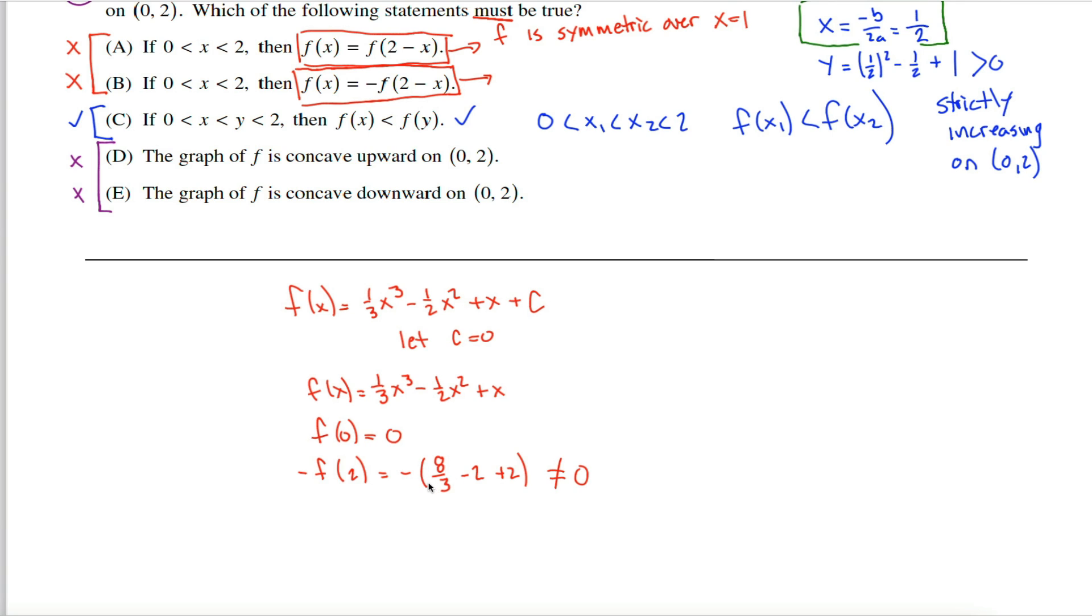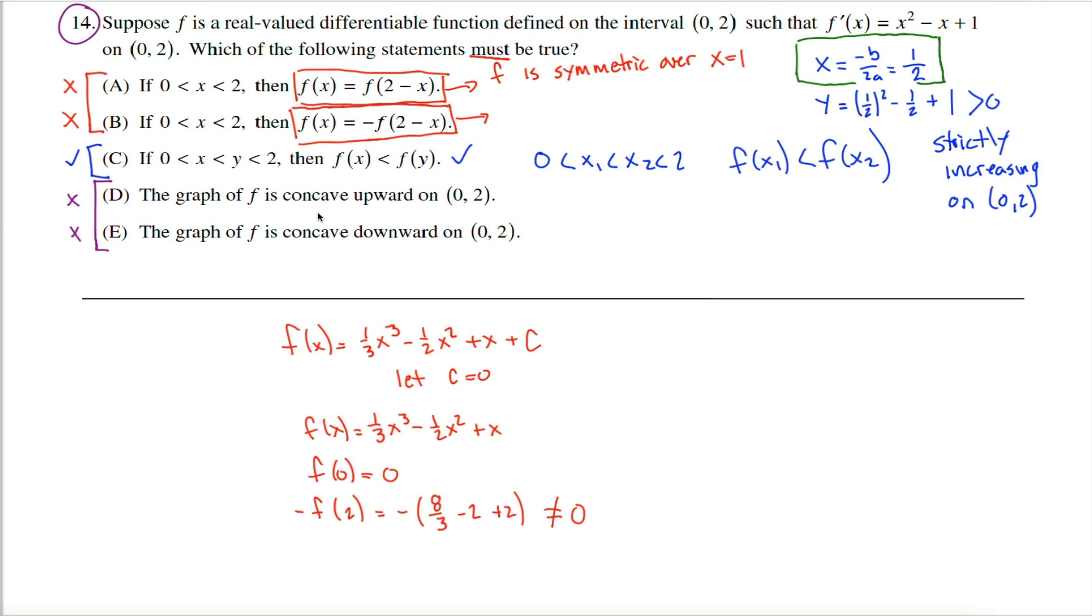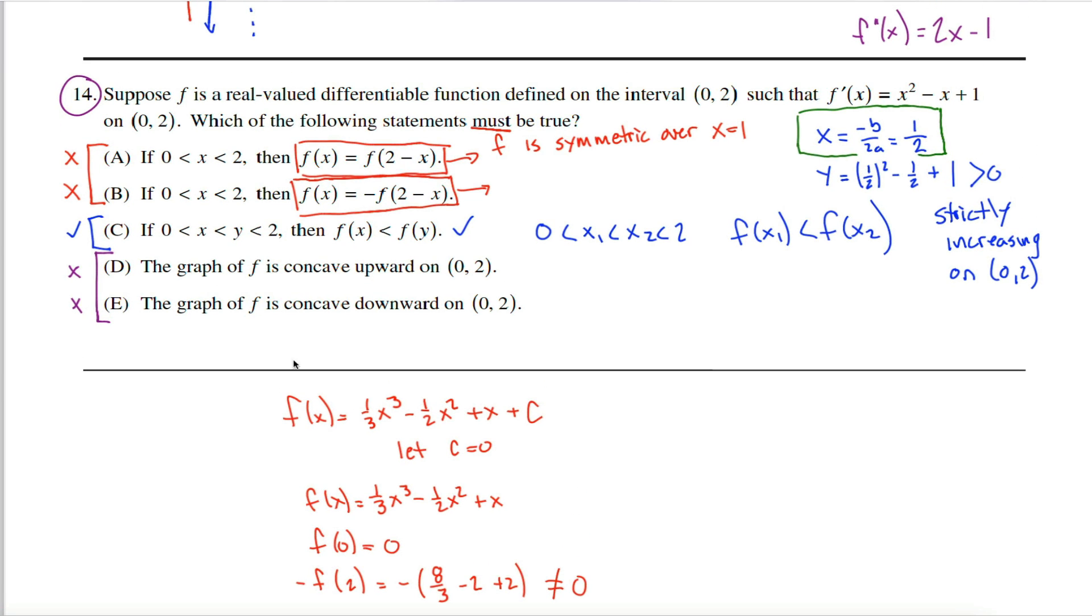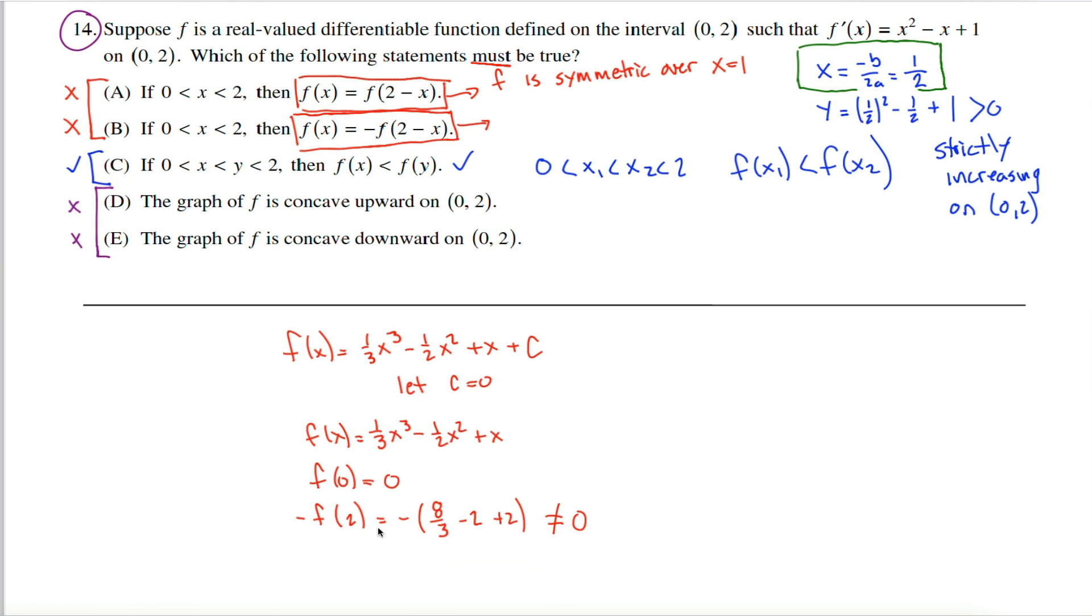f of zero is not equal to the negative of f of two. Therefore, b can't possibly be the answer. And you're like, oh, you screwed up. It doesn't say this is true for zero is less than or equal to x less than or equal to two. It says it's true for x strictly greater than zero and strictly less than two. That's true.